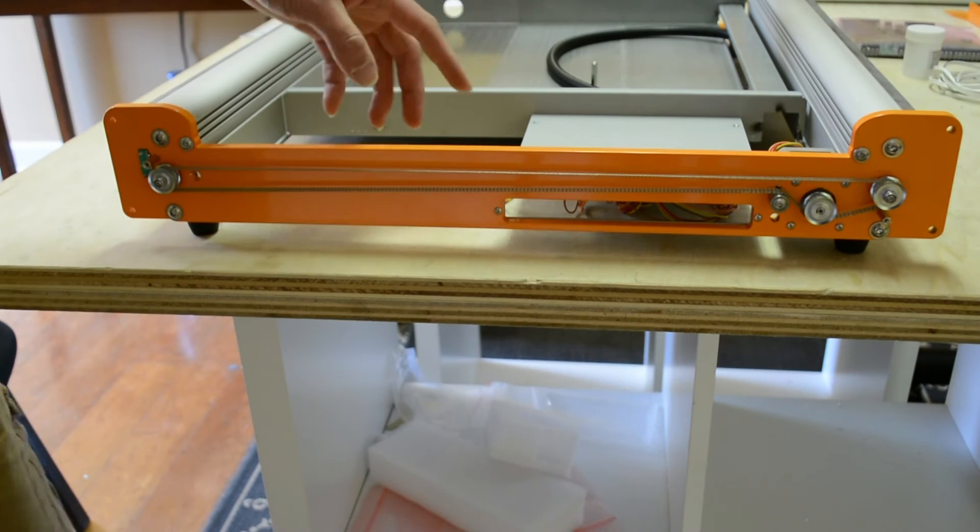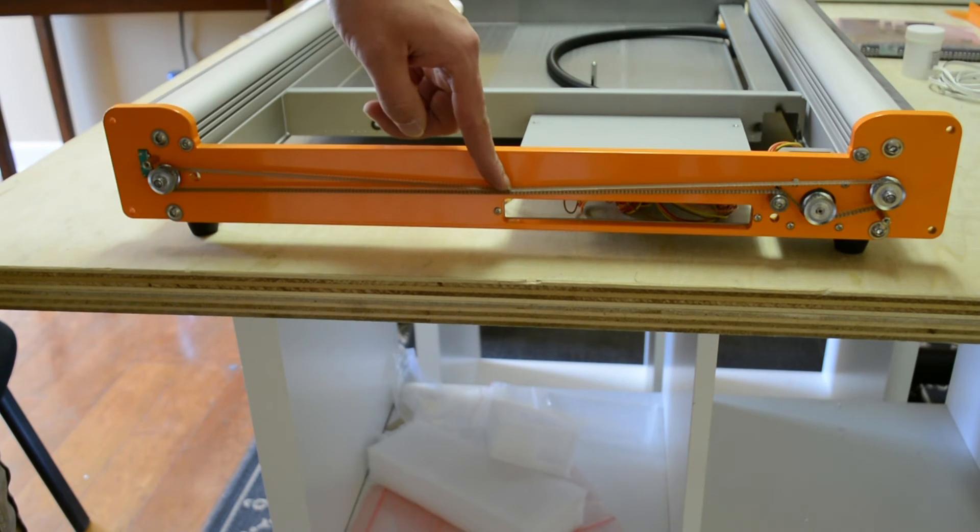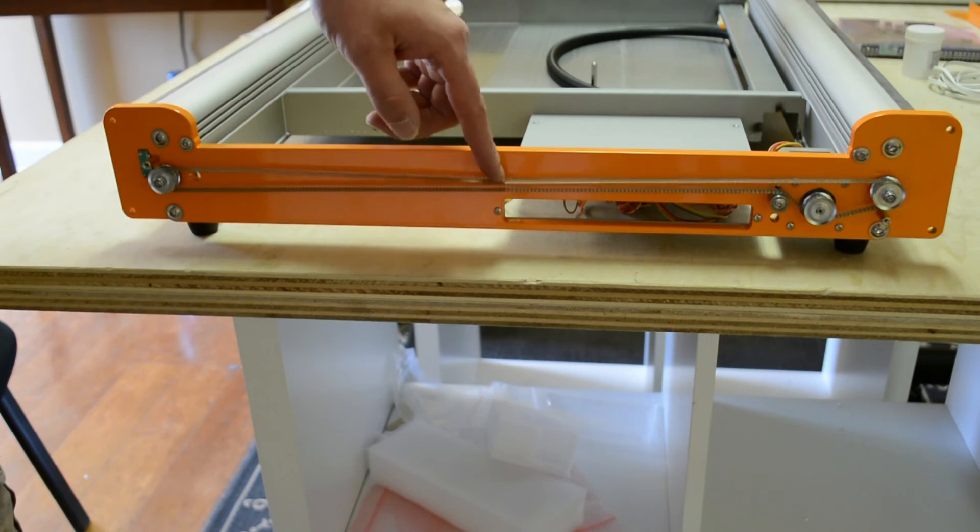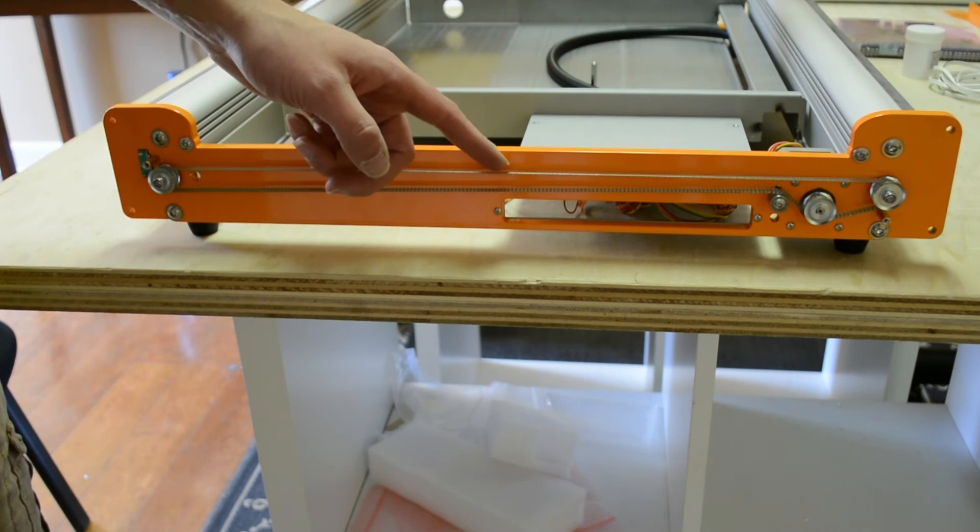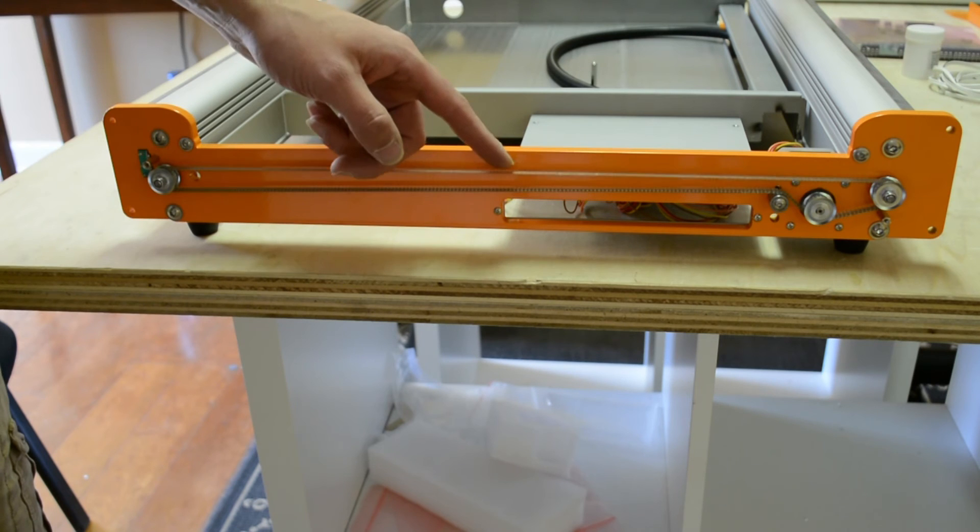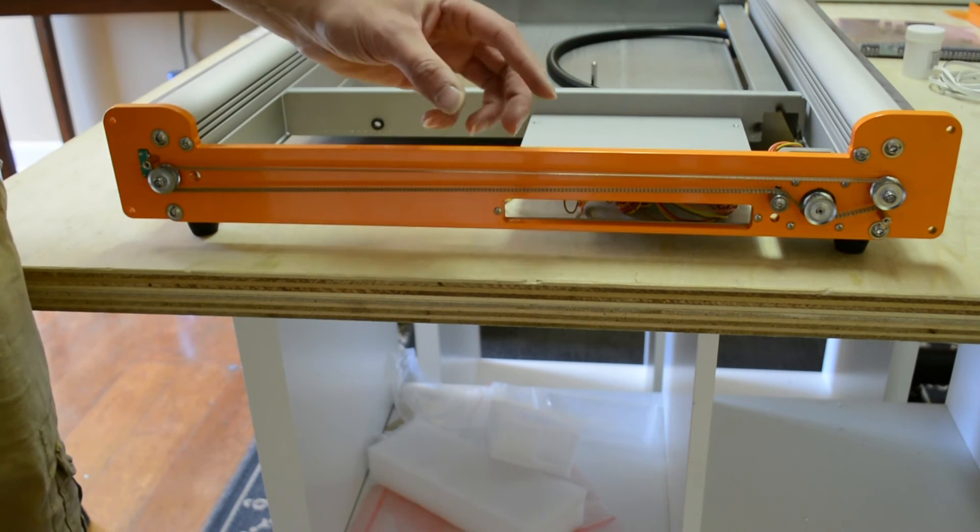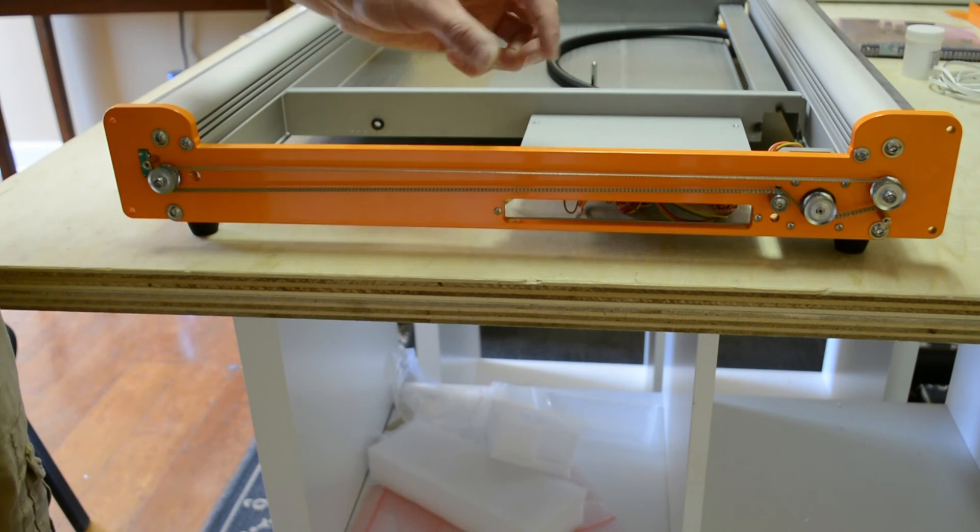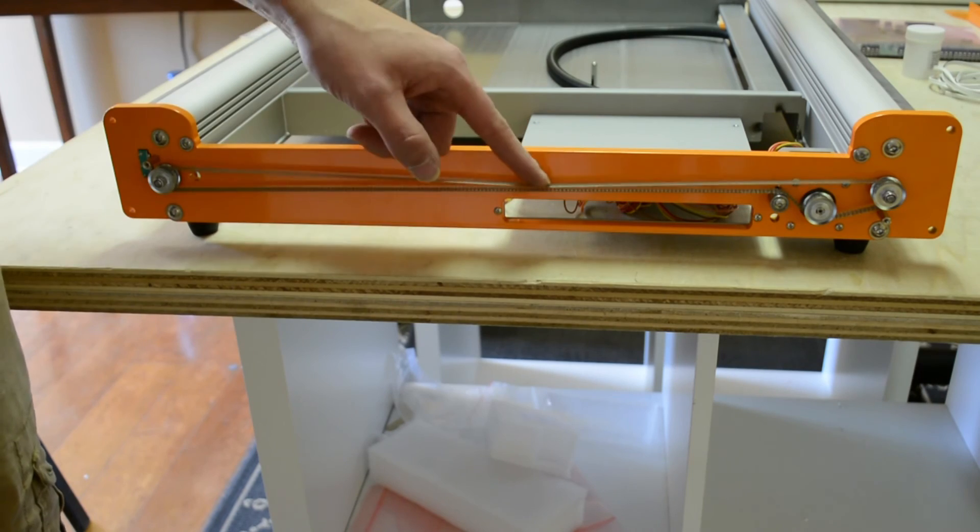For the tension on the belt, you want to be able to press it down in the center and touch the other side of the belt without a lot of resistance. It's actually going to be kind of on the looser side. If you think of it like a guitar string, you don't want it tight like a guitar string sits. You want it a little bit to the looser side.